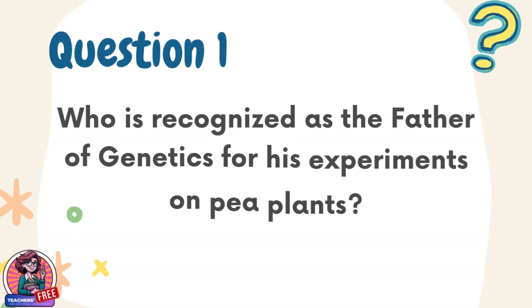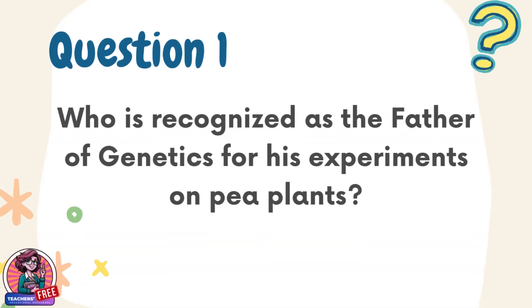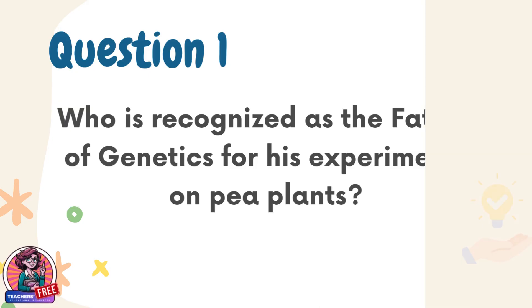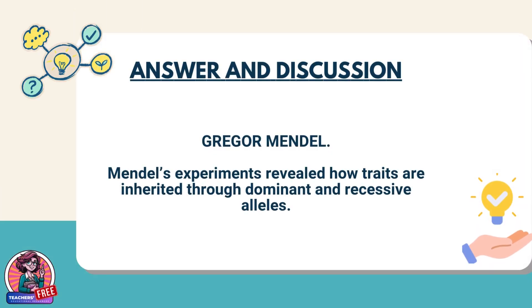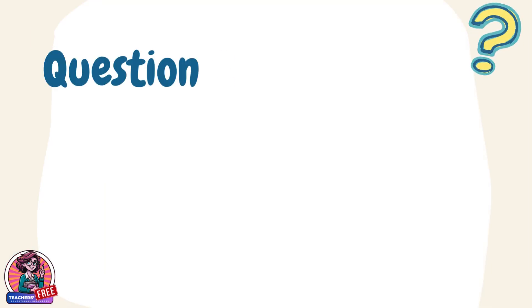Question 1. Who is recognized as the father of genetics for his experiments on pea plants? Answer: Gregor Mendel. Mendel's experiments revealed how traits are inherited through dominant and recessive alleles.